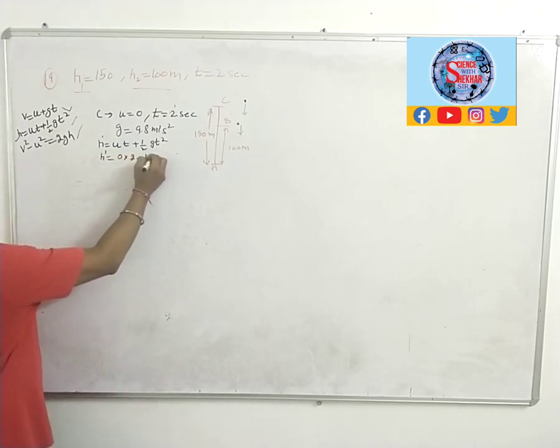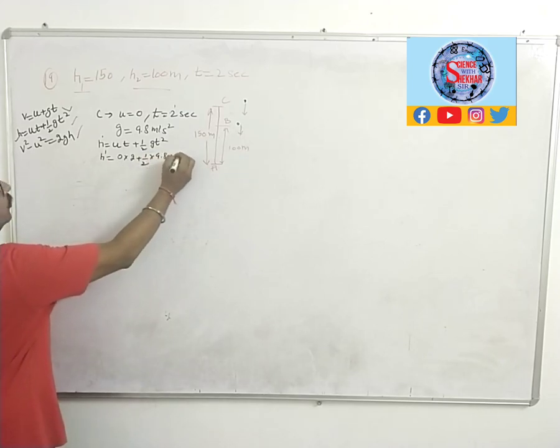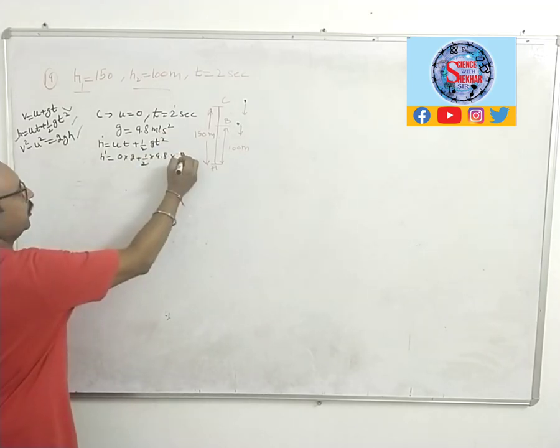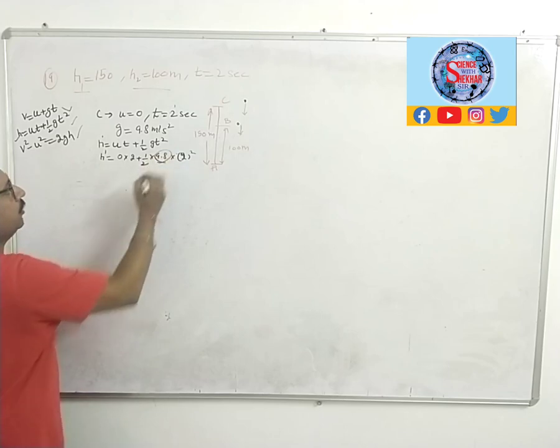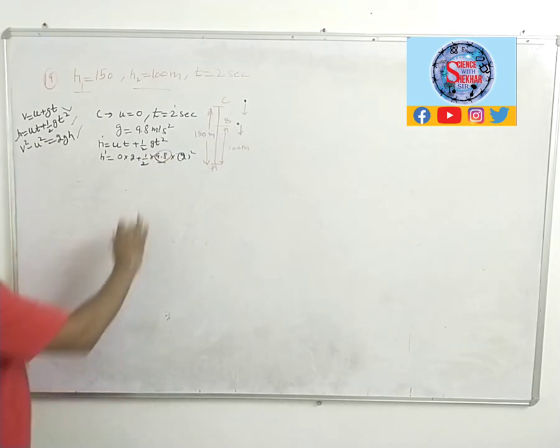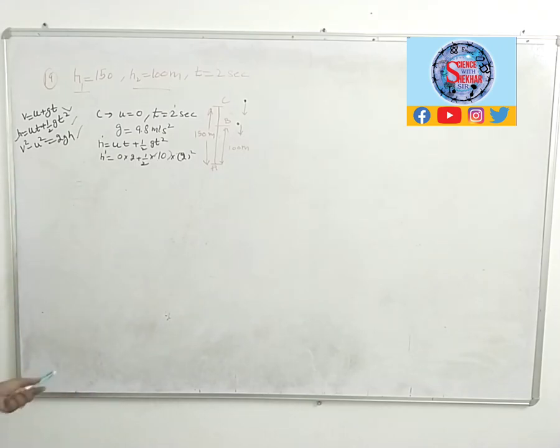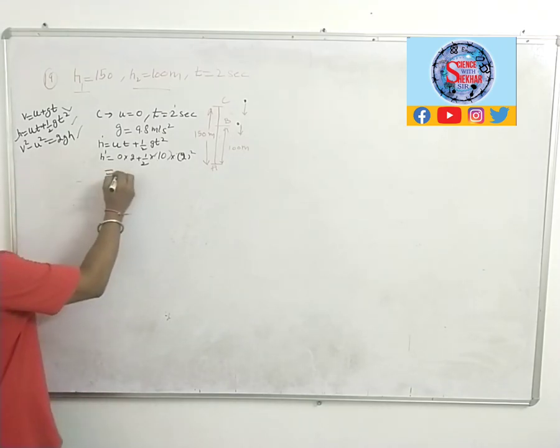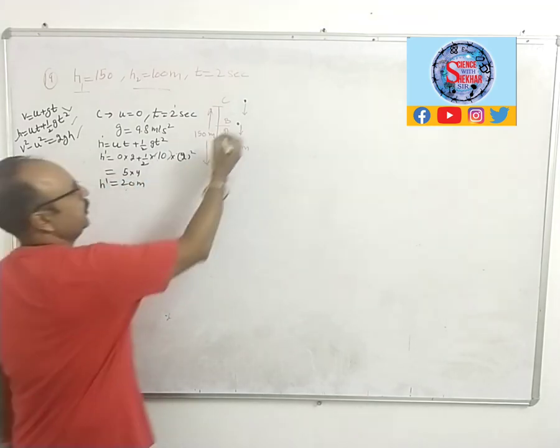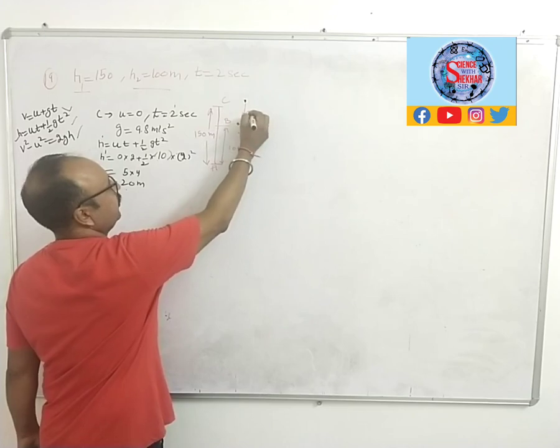We can use 10 meters per second squared for our convenience as the acceleration due to gravity. So we have 5 into 4, that is 20 meters. So what does it mean? This stone has traveled 20 meters in 2 seconds.